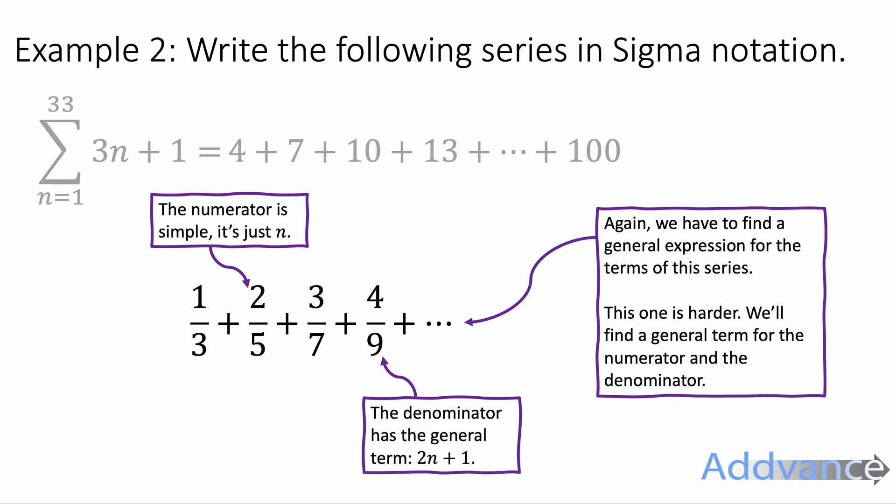But on the bottom the denominator has a general term 2n plus 1. Because it's going up in twos and if you go backwards one term you get one. So it's 2n plus 1. The nth term of these fractions is n over 2n plus 1.